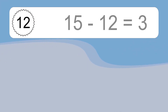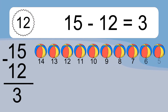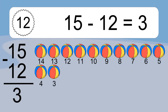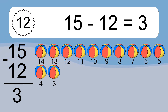15 minus 12 equals what? 15 minus 12 equals 3. Let's count it. 14, 13, 12, 11, 10, 9, 8, 7, 6, 5, 4, 3.